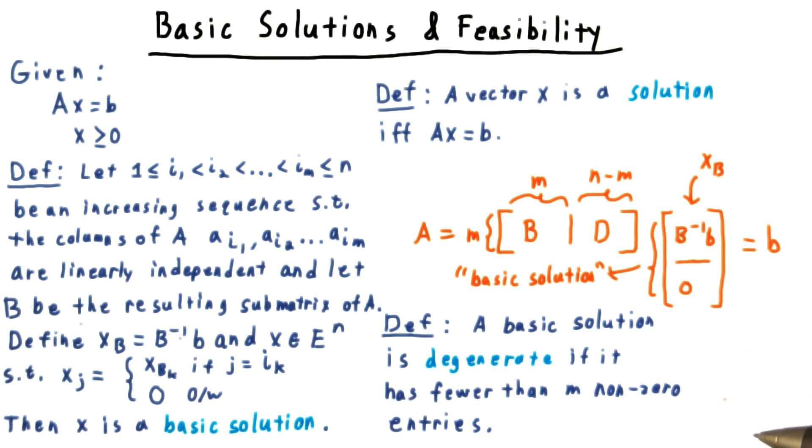Such a solution is called degenerate. This corresponds to the case where a vertex is at the intersection of more than n hyperplanes in the symmetric form.